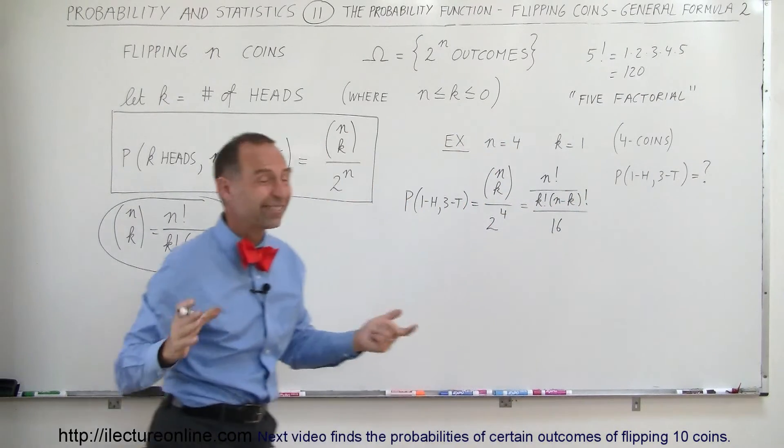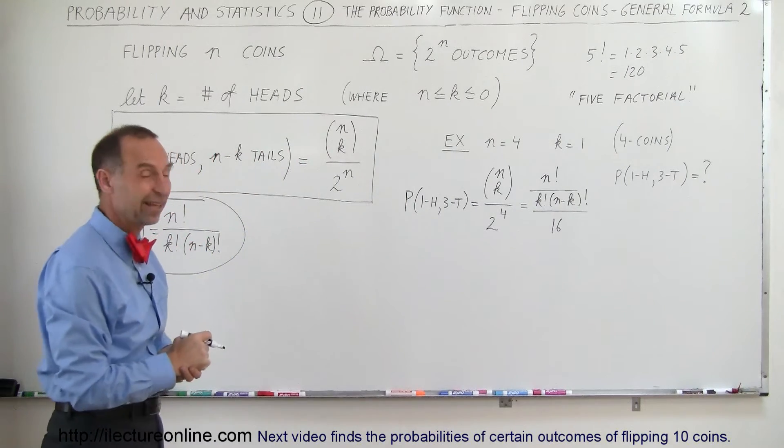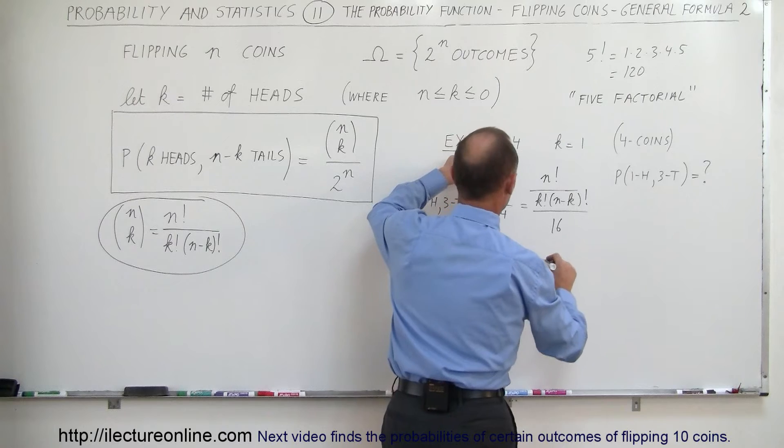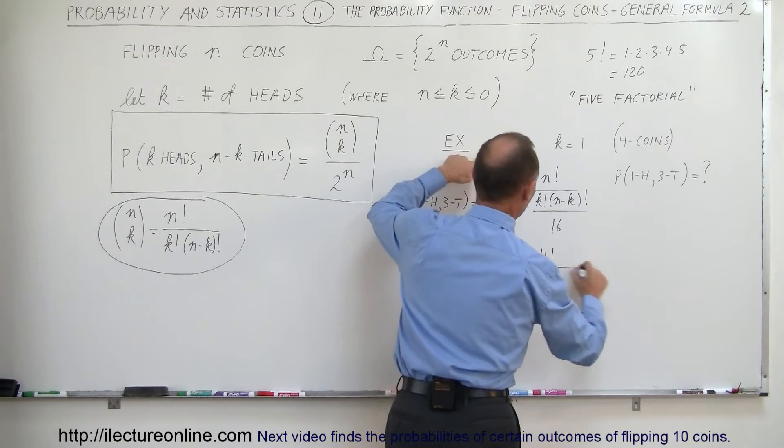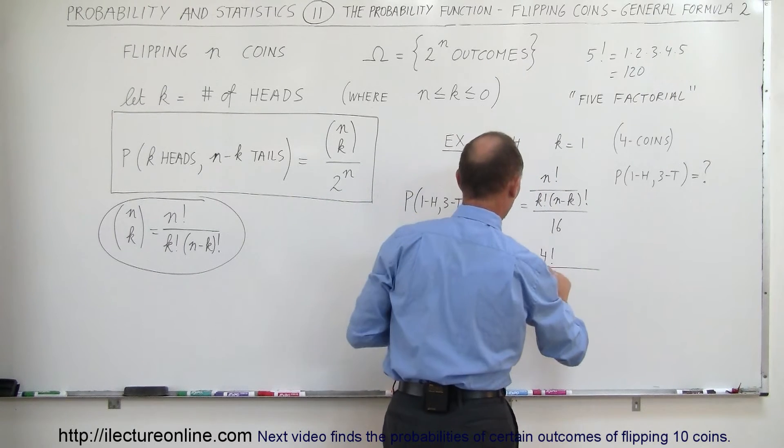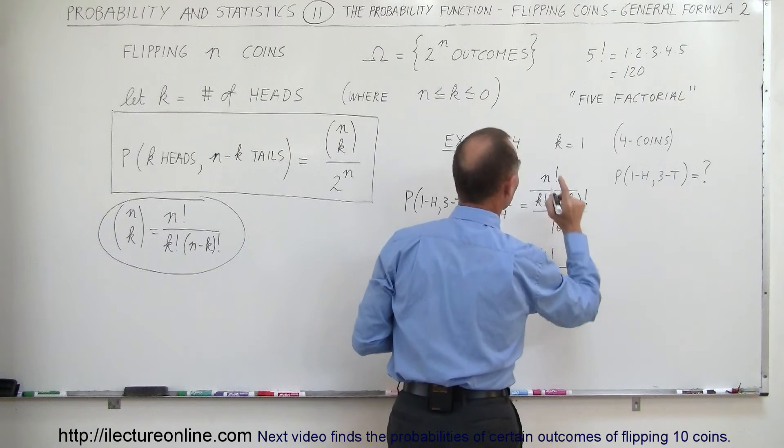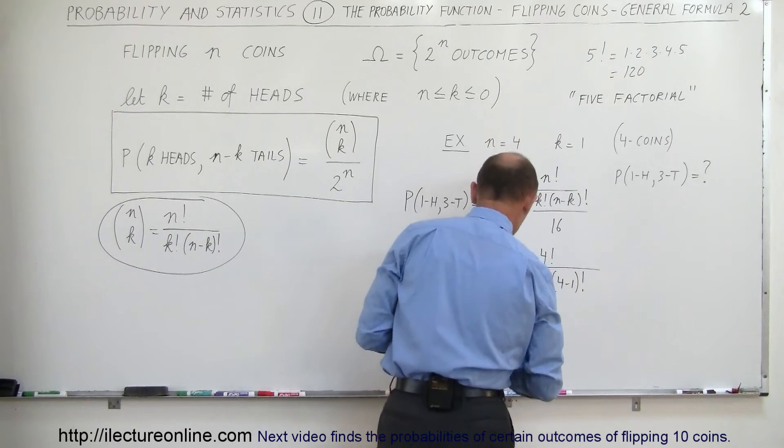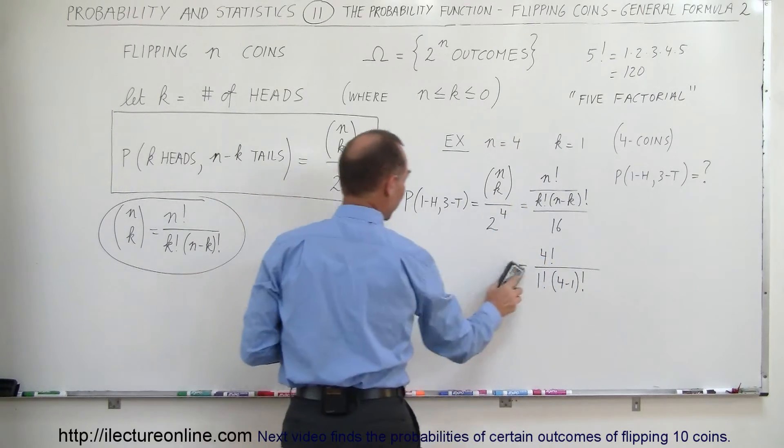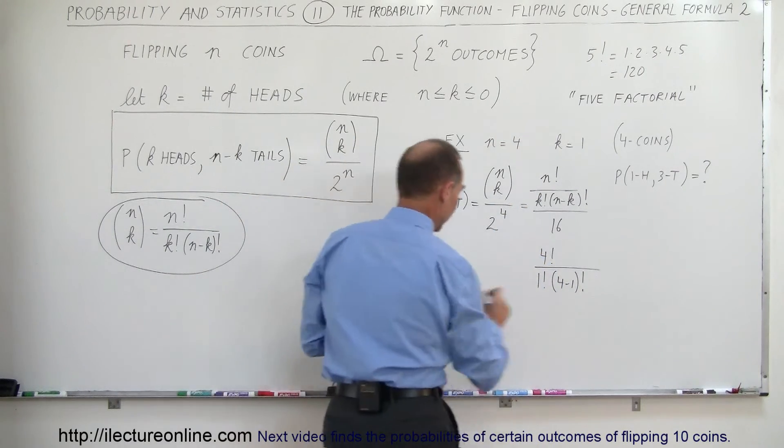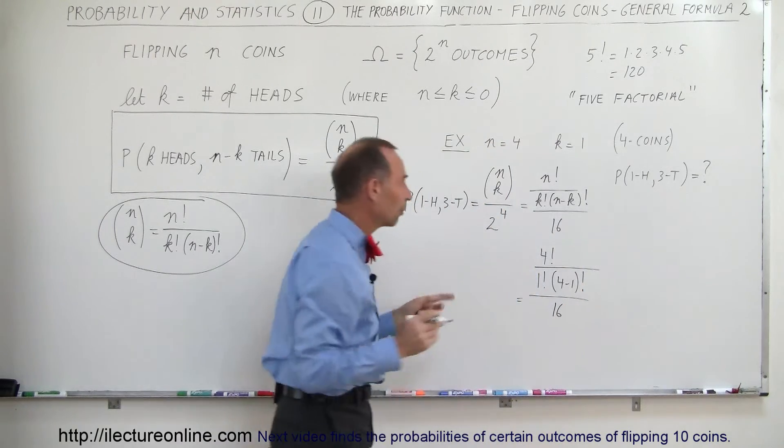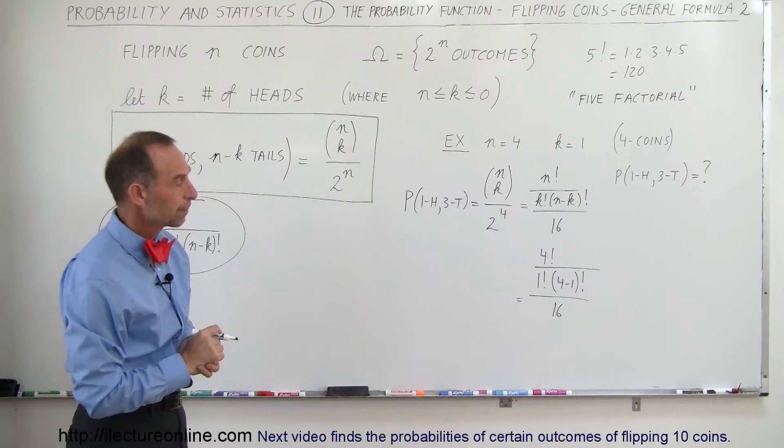This is going to be n factorial divided by k factorial times n minus k quantity factorial divided by 16. Remember, with 4 coins, there's 16 total possible outcomes. Let's now plug in the numbers and see what we get. n was 4, so we get 4 factorial divided by k. k was going to be 1 factorial times 4 minus 1 quantity factorial. And the whole thing divided by 16, which is the total number of outcomes, 2 to the 4th power.